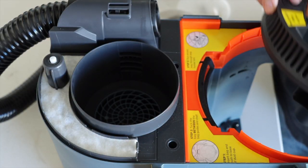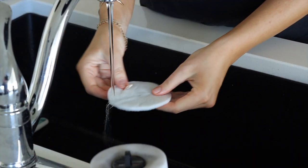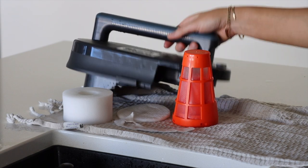The Mess Master has three filters that need to be cleaned once a month. Rinse the filters with cold water only. Leave the lid and filters out to dry overnight.